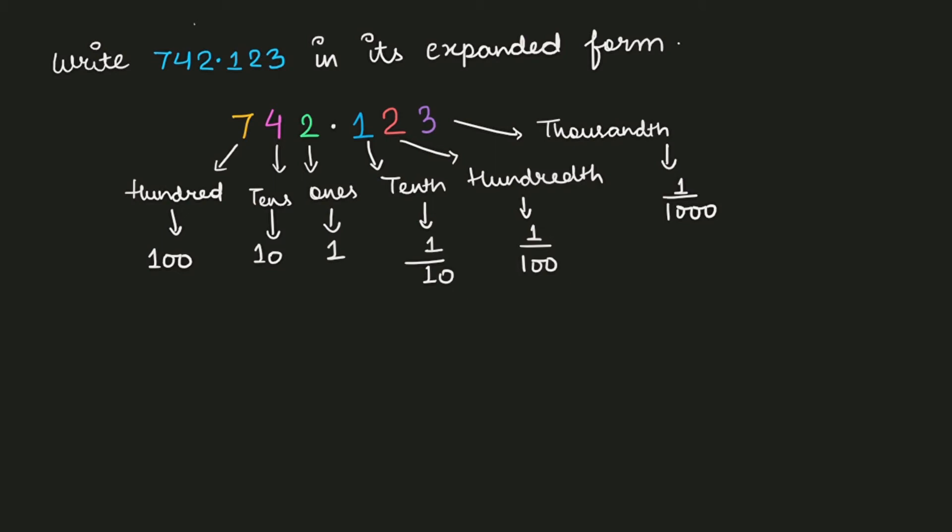So the leftmost digit is 7. Let me start writing the expanded form of this decimal number. So 7 will be multiplied with its place value. Its place value is 100.